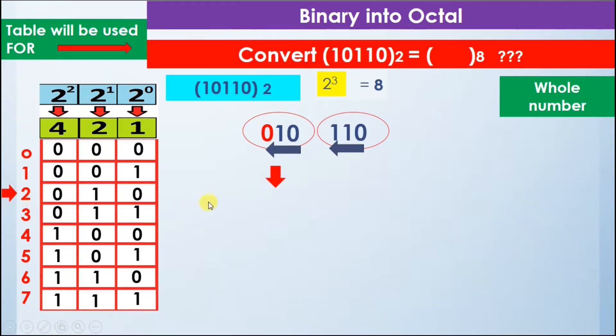We write 2 here. Next, we have the number 110, so we find 110 in the table. Here is 110 in the table, and it equals digit 6.